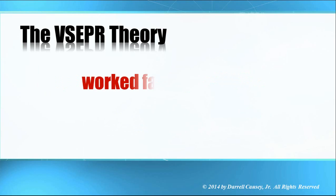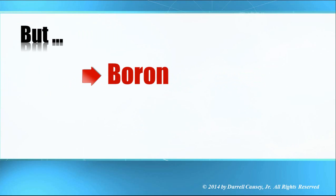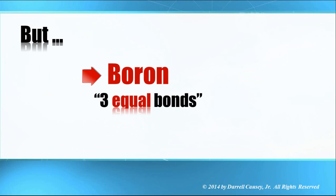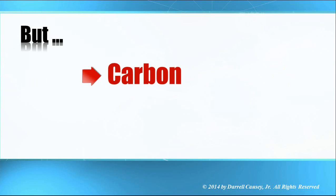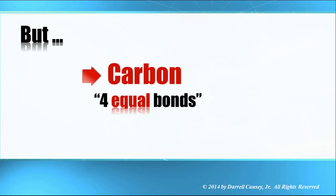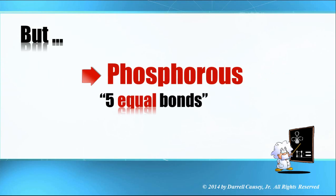And this worked fairly well, but it couldn't explain why boron had three equal bonds, or why carbon had four equal bonds, or even why phosphorus could form five equal bonds, or the fact that it could do five bonds when we know it's supposed to be three.